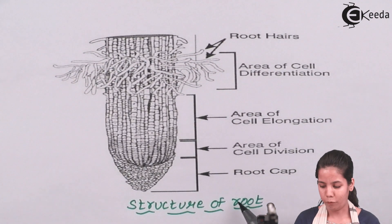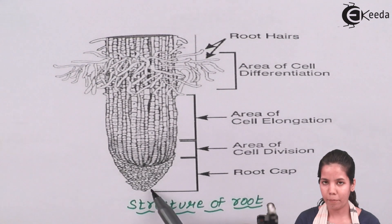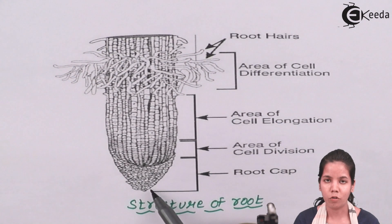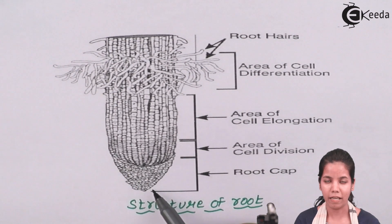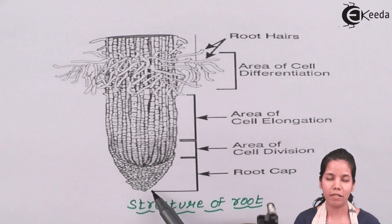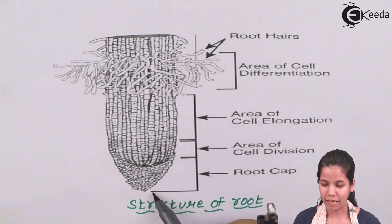This is a structure of root. As you can see the root cap is at the apex part. We all know that in morphology the part which is towards the bottom side is called apex and the part which is on the upper side is called base. So root cap is at the apex side and it acts as a protection covering.